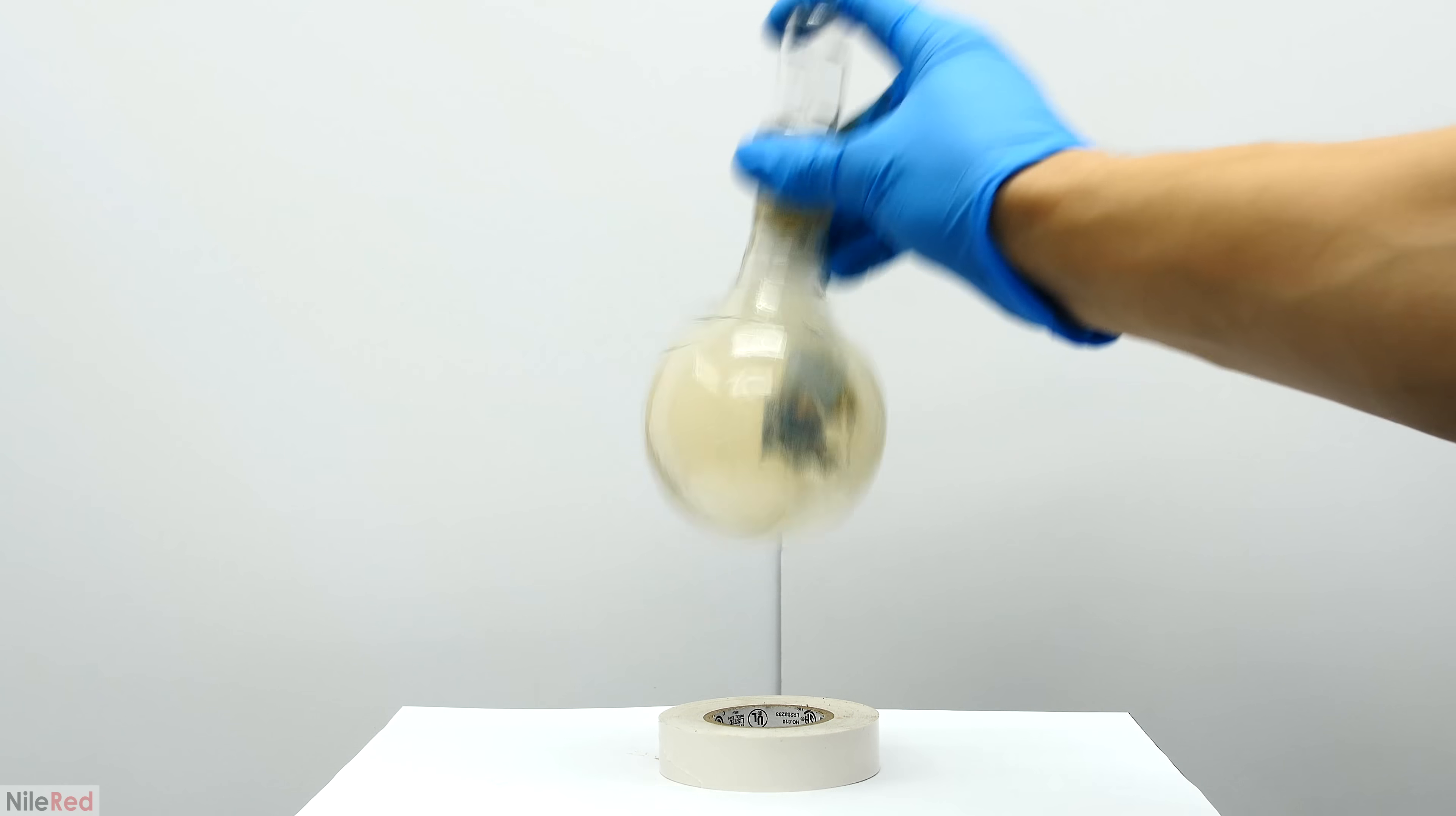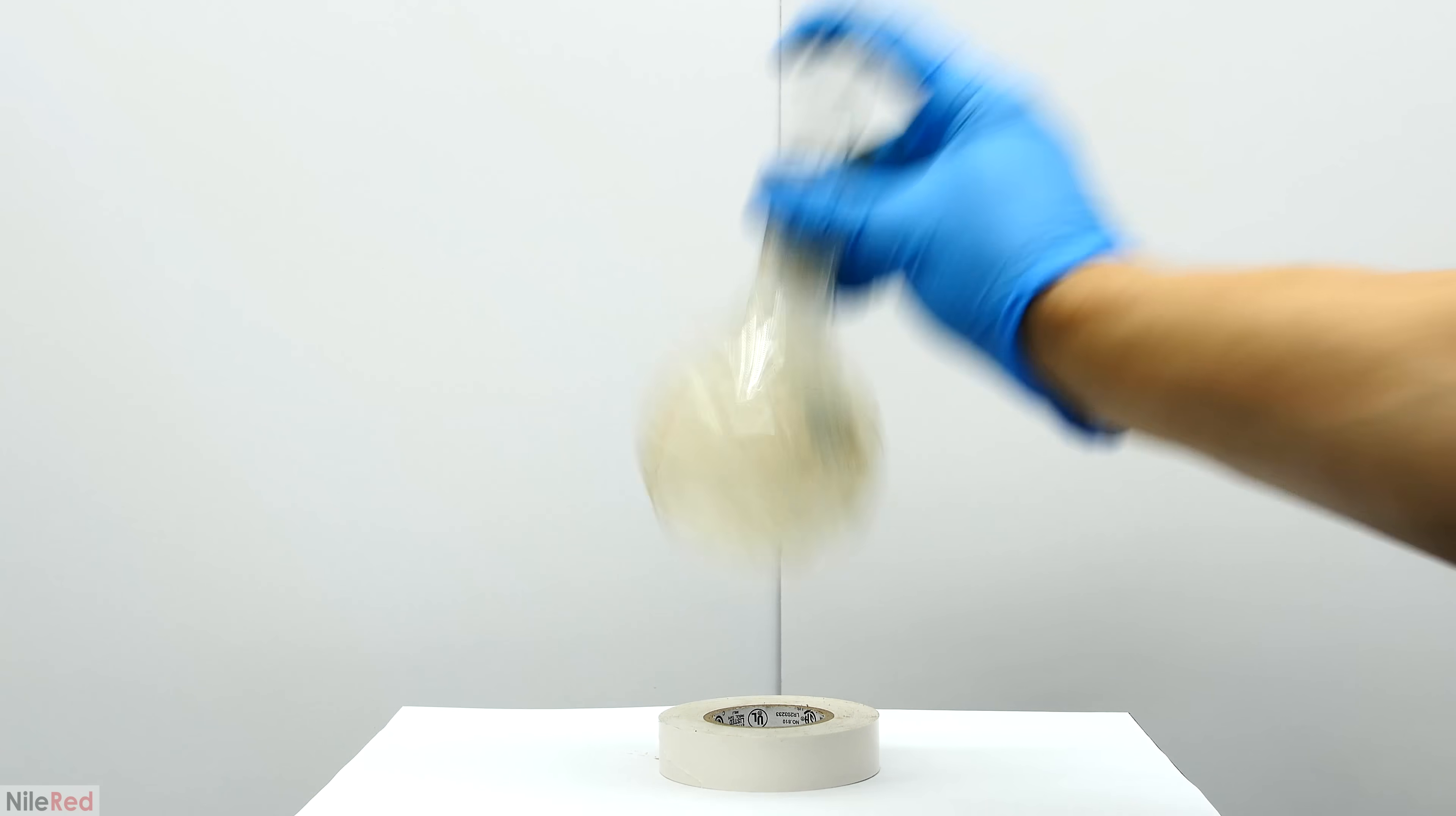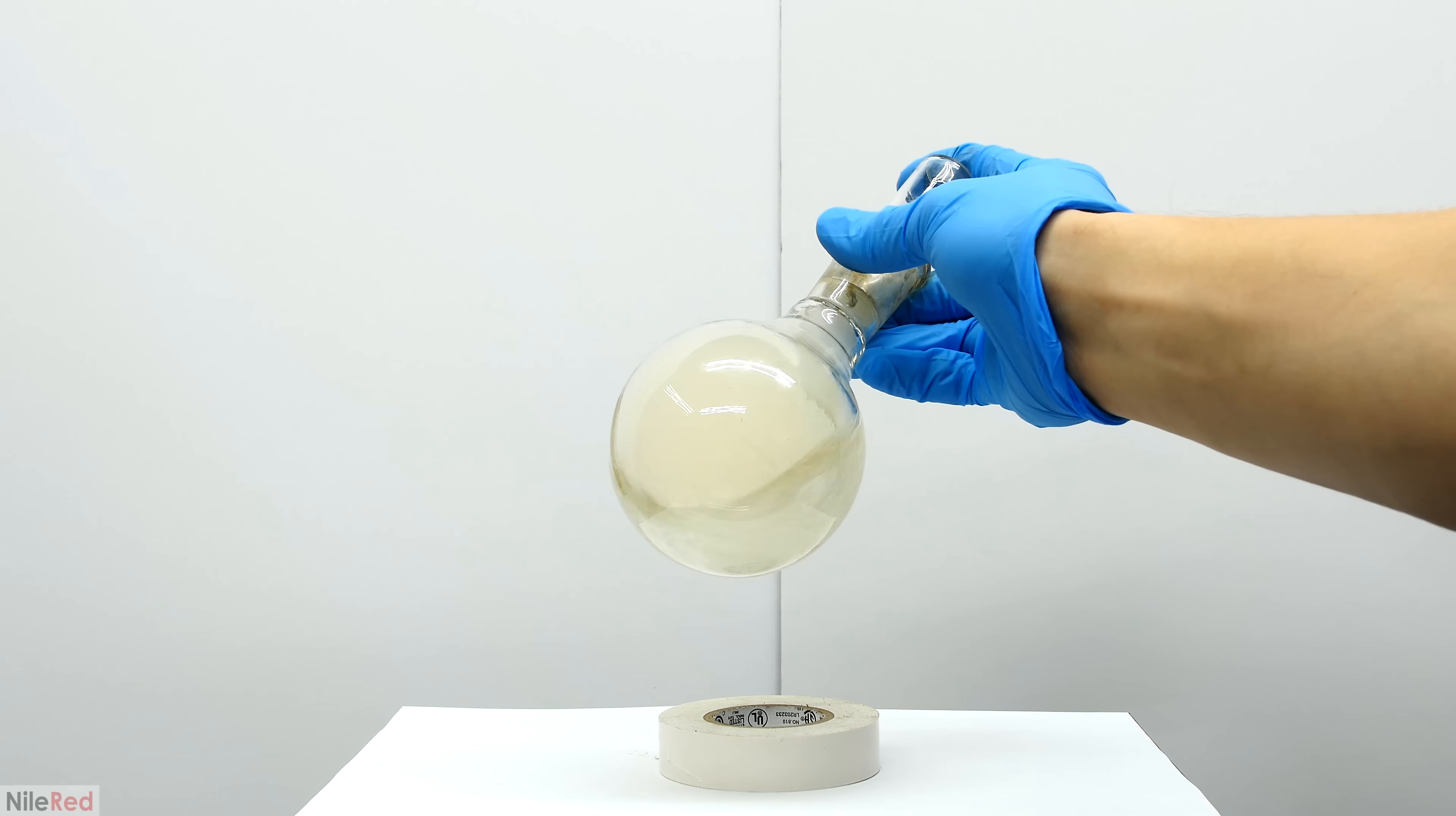After just several seconds of shaking, the flask is pretty clean. The brownish color that you see is not silver, and it's actually nitrogen dioxide gas that's been let off by the nitric acid.